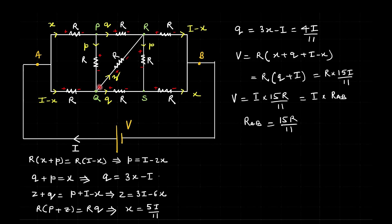Since V = I·R_AB, we get R_AB = 15R/11. Even though I placed the resistor incorrectly in the last video, we got the same resistance because all resistors are equal and the reverse symmetry still holds. The corrected current distribution is: x on two branches, I − x on two branches, q on two branches, and p on the corresponding symmetric branches.